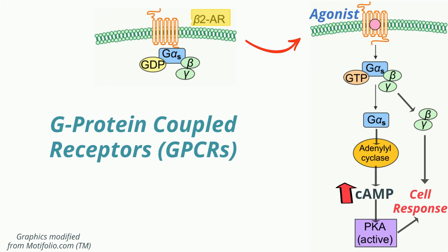Other receptors can be guanylate cyclase-linked. In this case the plasma membrane receptors have guanylate cyclase activity, and the cyclic GMP form activates protein kinase G, which phosphorylates proteins associated with cellular action. Examples of this type of receptor include atrial natriuretic factor and nitric oxide, directly or via muscarinic receptors.